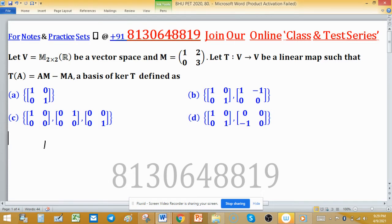As matrix M is given 1, 0, 2, 3, and V is a vector space M 2 by 2 over R, the dimension of this vector space V is 4. Therefore, we have to find a basis for kernel T.